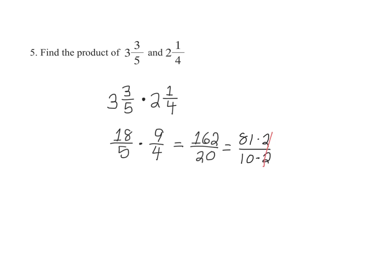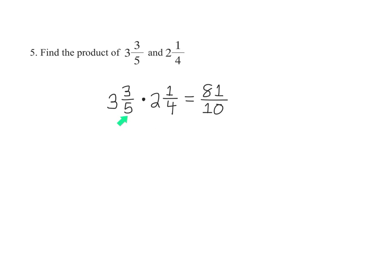2 over 2 cancels, which leaves us with 81 over 10. Therefore, 3 3/5 times 2 1/4 is equal to 81 over 10.